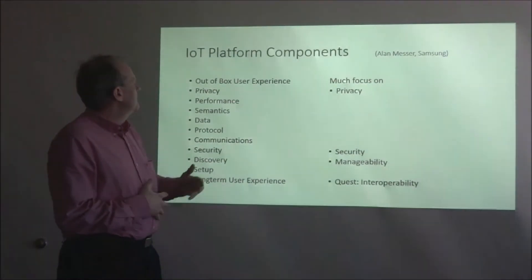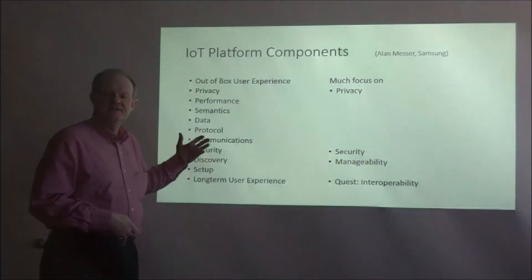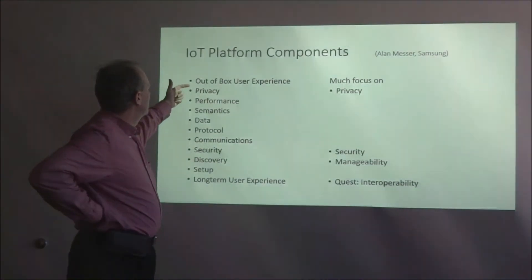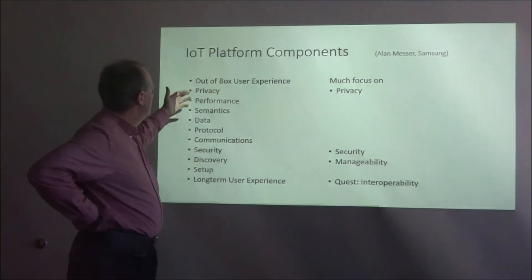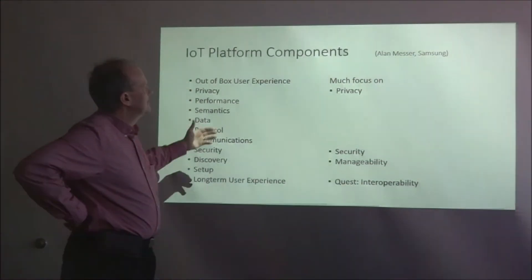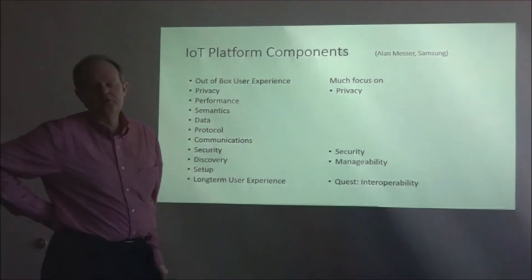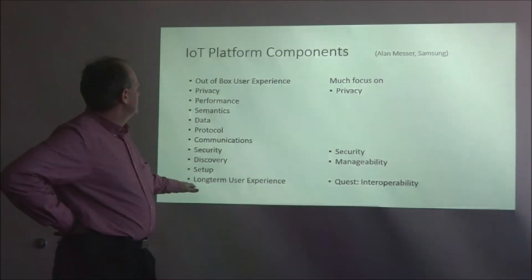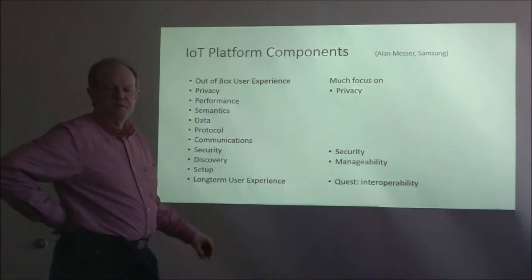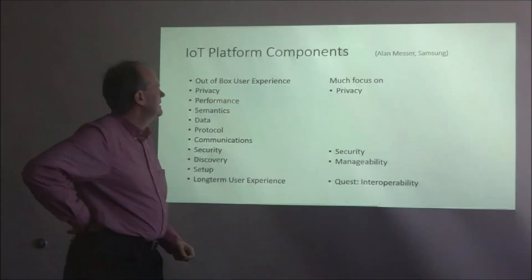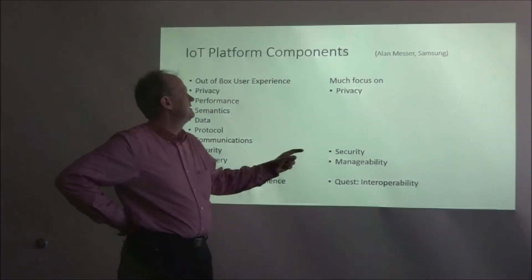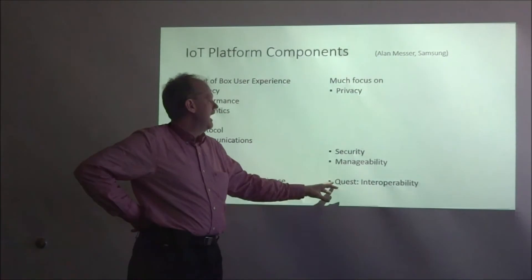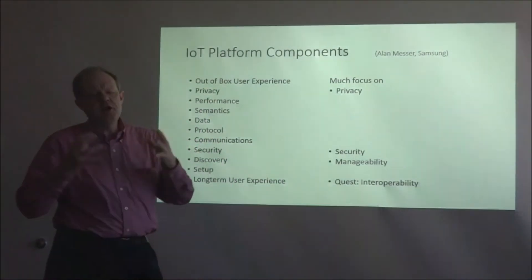IoT, or Internet of Things, has platform components — the characteristics you want out of the box, and user experience across all these things. This is a graph from Alan Messer of Samsung, presenting all the characteristics and all the things that people are working on in the Internet of Things. There's much focus these days on privacy, security, and manageability, and a quest for interoperability.